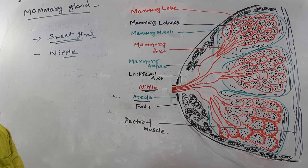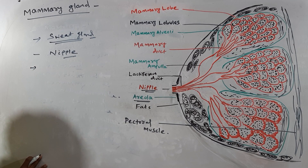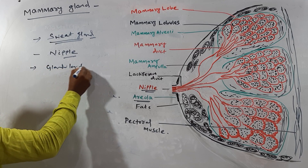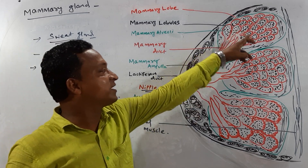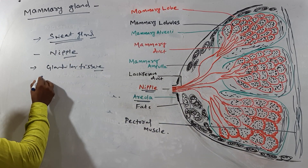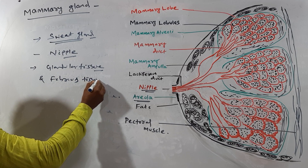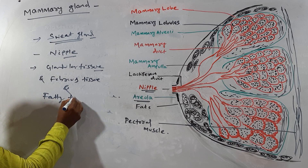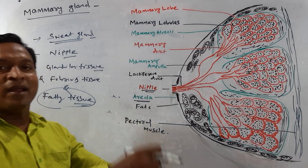The mammary glands are made up of glandular tissue, fibrous tissue, and fatty tissue — that is, adipose tissue.